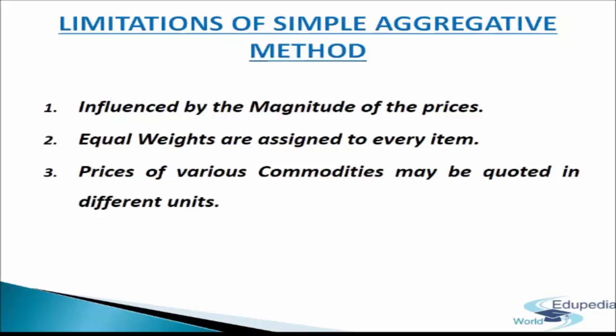The third limitation is that prices of various commodities may be quoted in different units, such as rupees per quintal, rupees per litre, or rupees per metre. The index is therefore heavily influenced by the units in which commodities are quoted, causing some commodities to receive undue importance. These are the key limitations of the simple aggregative method.